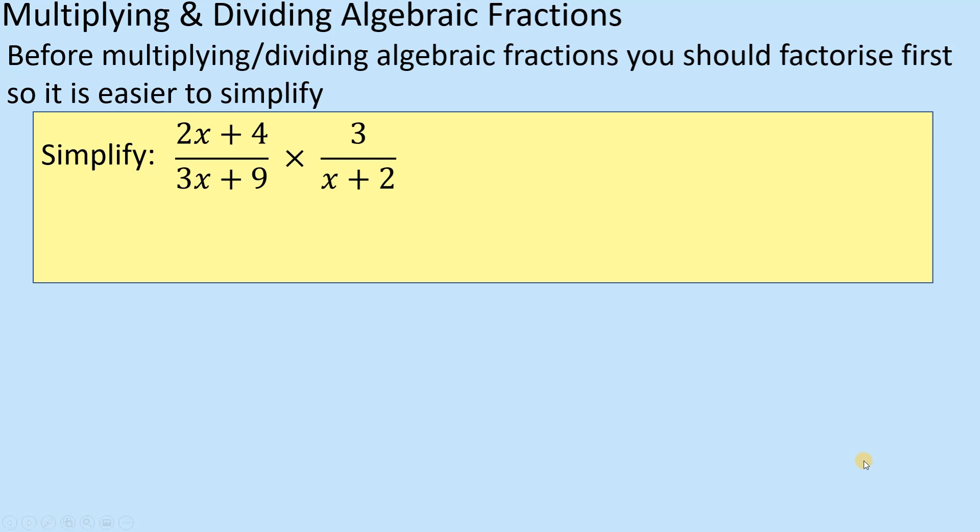Well the technique normally of multiplying fractions is you would times the top two, and then you would times the bottom two, and again nothing wrong with that, that would absolutely be fine and I'm sure you would get a solution from it. But you're going to end up with something like 6x + 12 at the top and then you're going to have a double bracket at the bottom which would need expanding and which will turn into a quadratic, which then is going to look a little bit more complicated. And of course the key bit of this is it's asked us to simplify it.